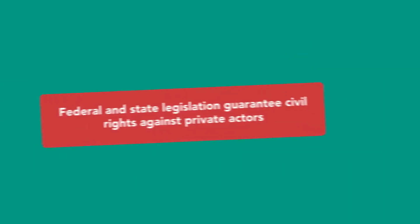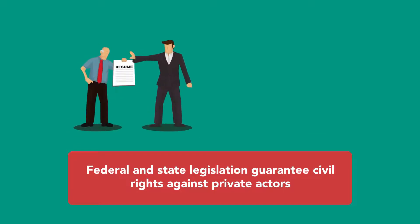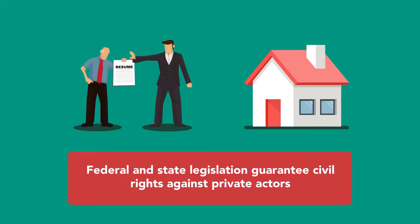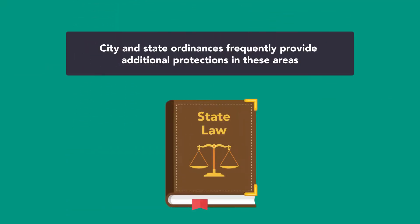Federal and state legislation guarantees civil rights against private actors. For example, employment and housing discrimination are prohibited by federal civil rights legislation, and city and state ordinances frequently provide additional protections in these areas.